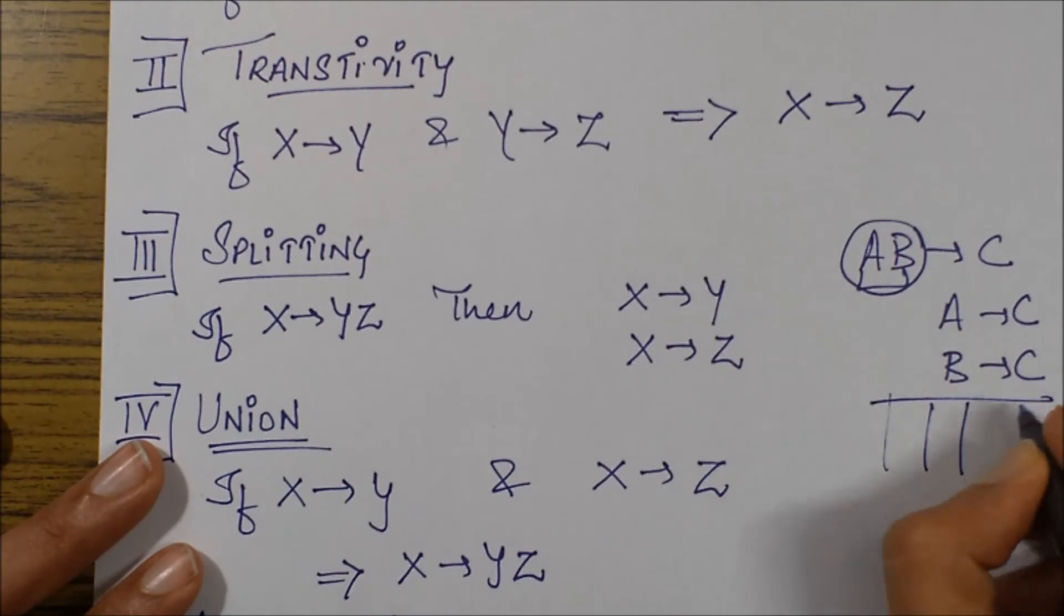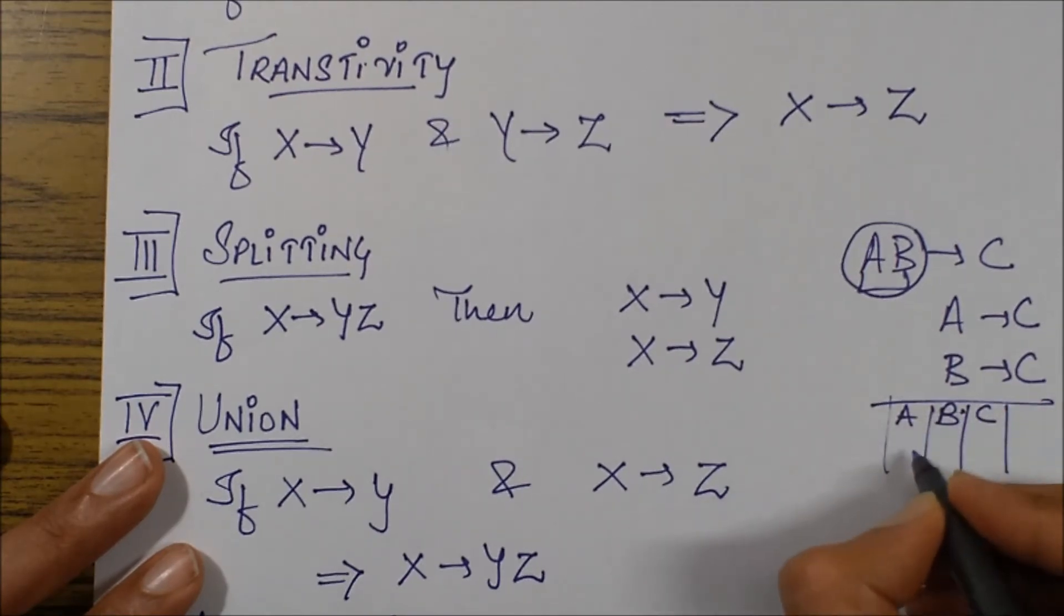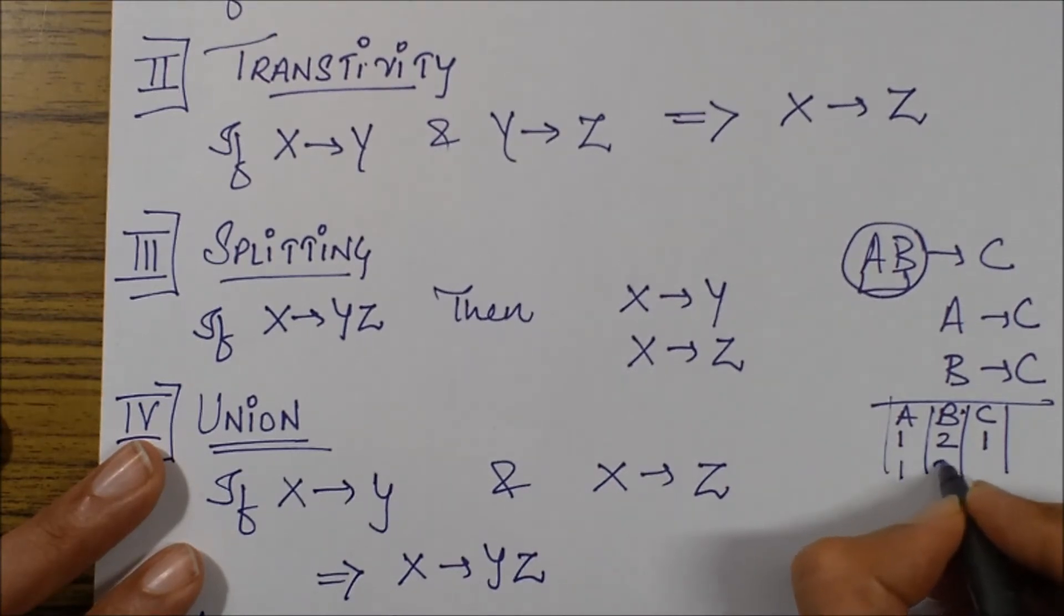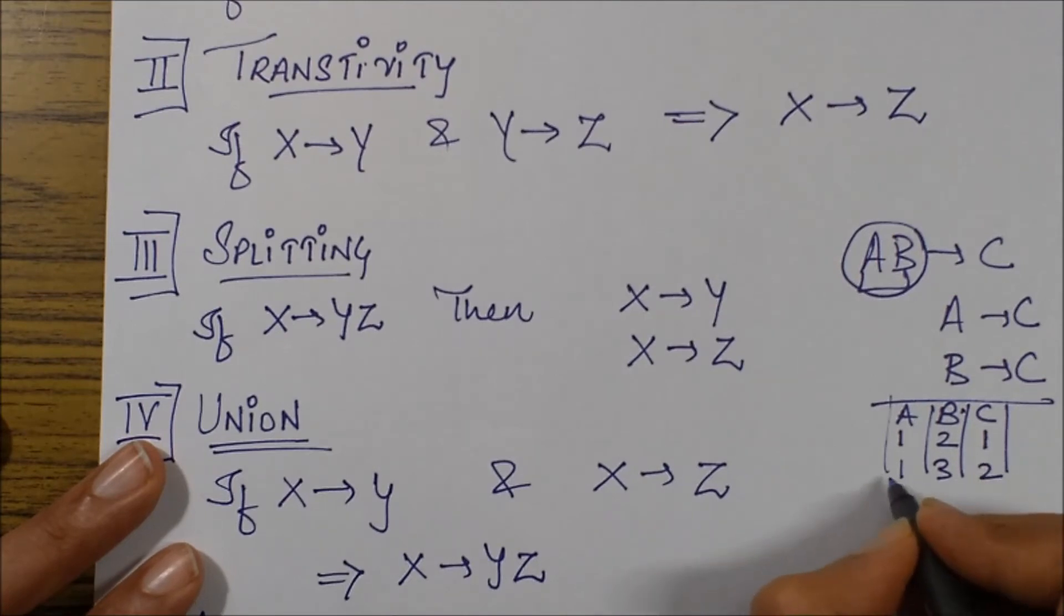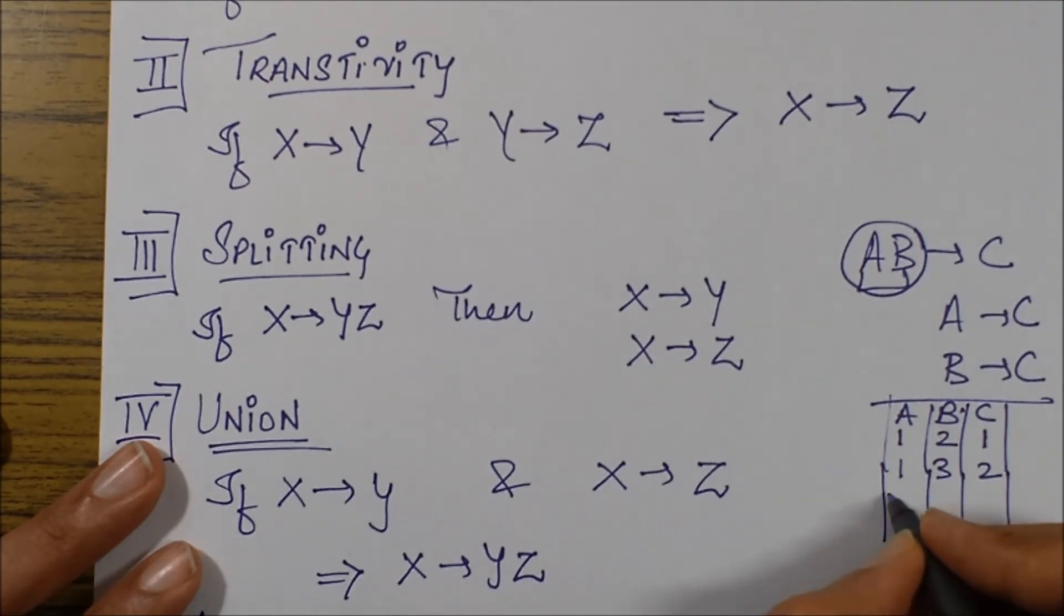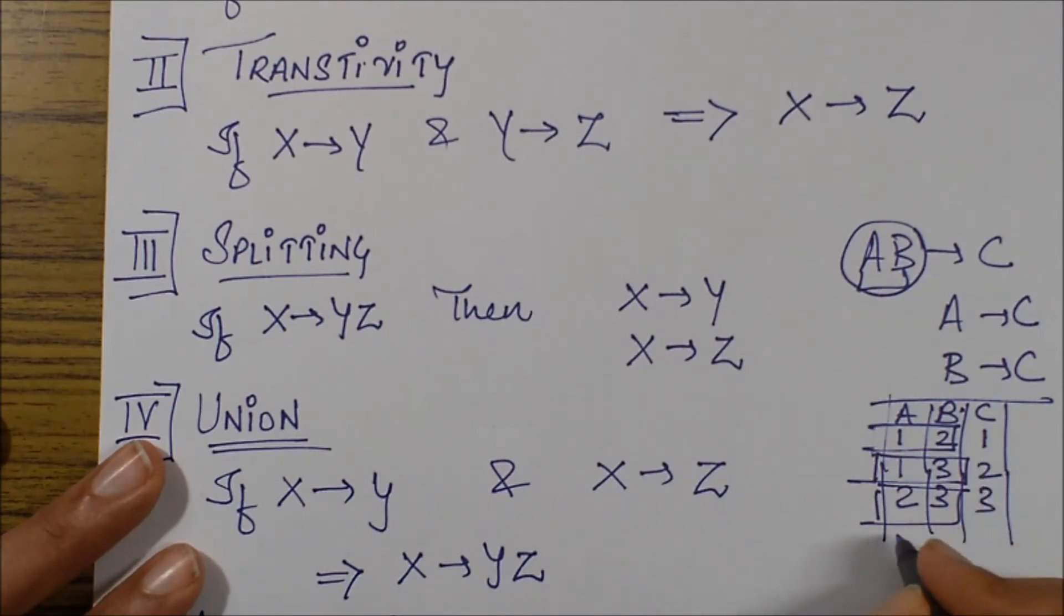If I have to explain it with an example, let's say I have these records A, B and C. Then I would take an example as 1, 2 goes to 1, then 1, 3 goes to 2, and 2, 3 goes to 3. Now what is happening over here? If I say C has unique values, but in accordance to a combination of A and B.